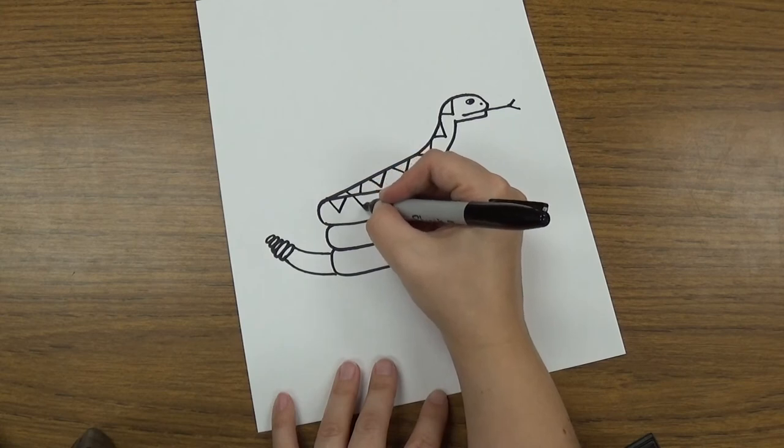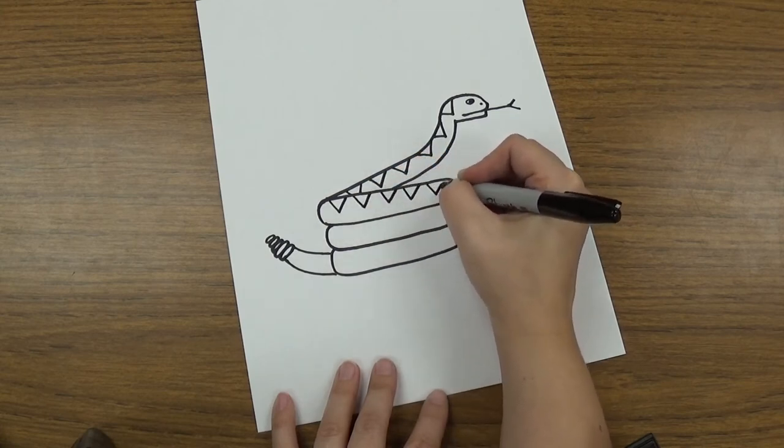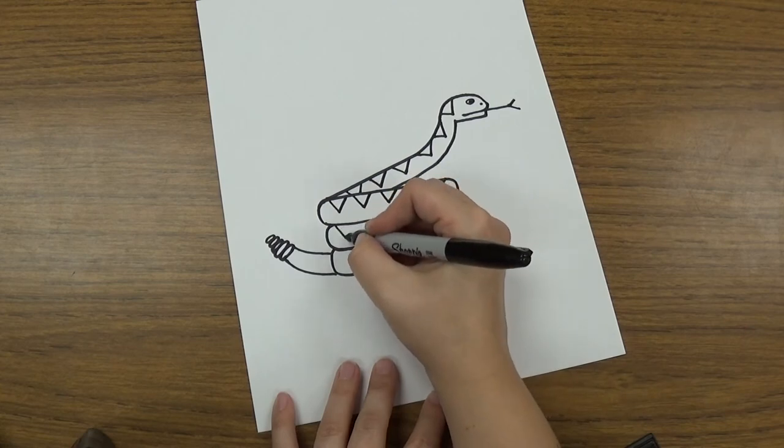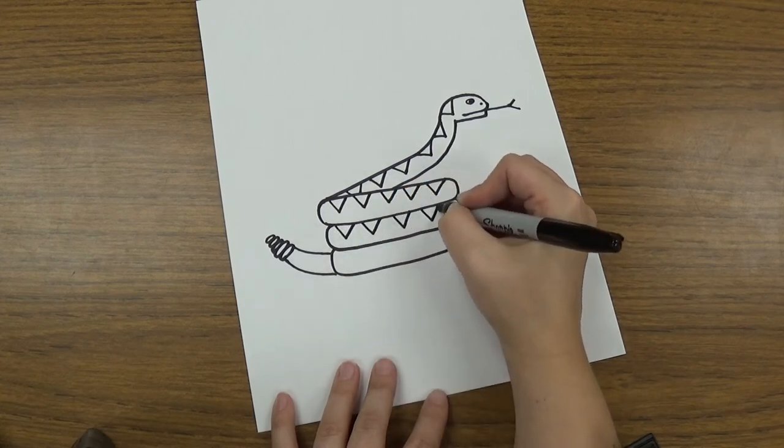And I'm gonna make them on the top of all of them. So it's like the top of his body has triangle shapes on them. Just like this. Triangle shapes.